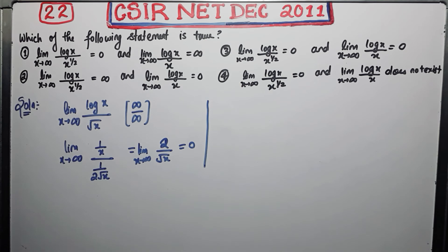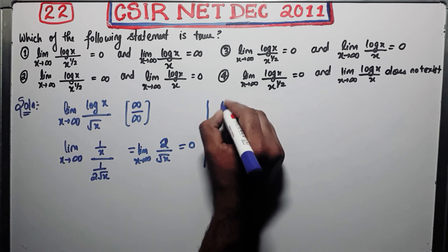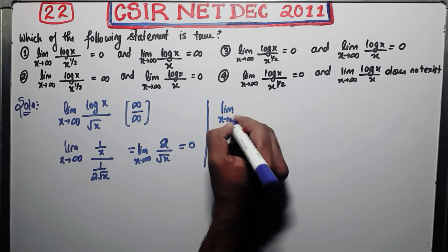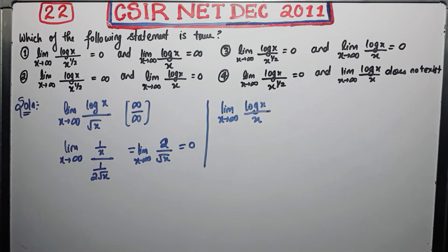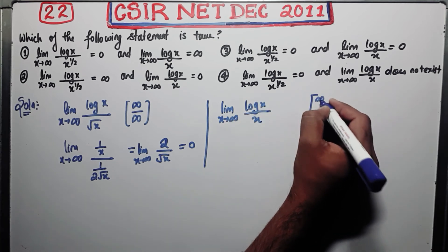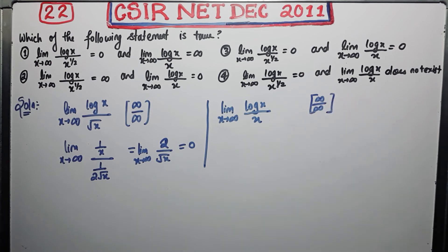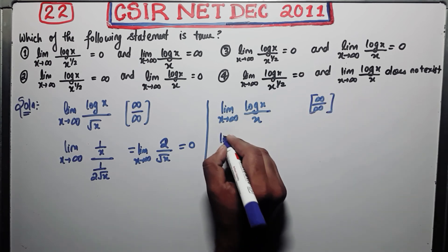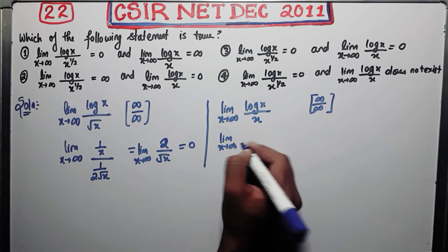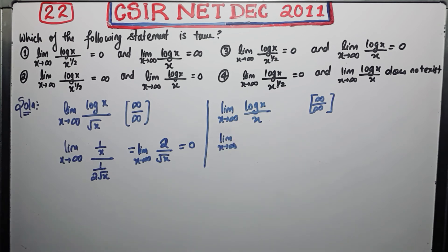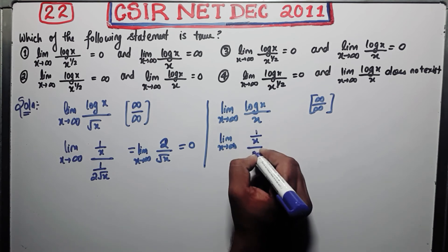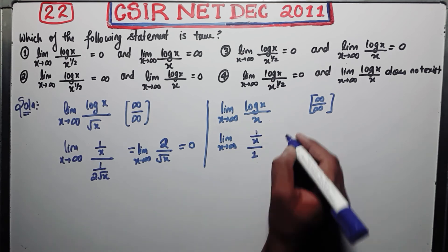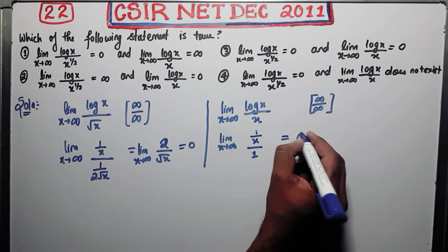Now another limit to evaluate is: limit as x goes to infinity of log(x) over x. Again, this is an infinity over infinity form. By L'Hôpital's rule, differentiate the numerator to get 1 over x, and differentiate the denominator to get 1. So from here you are getting 0 as your answer.